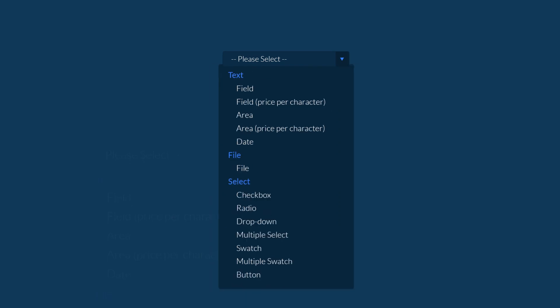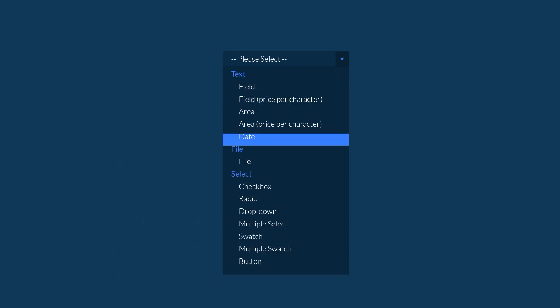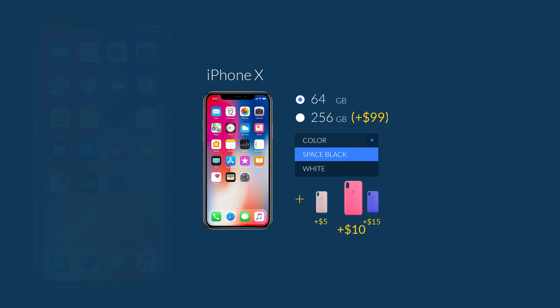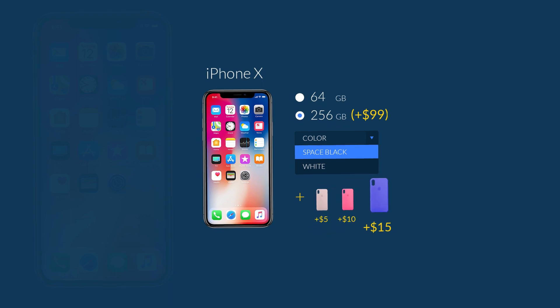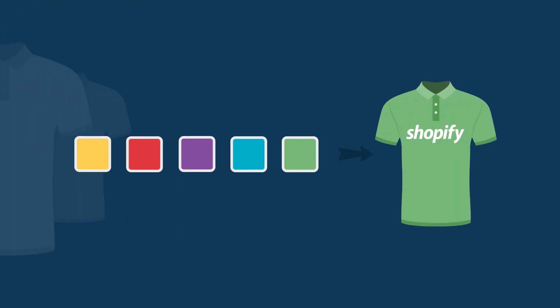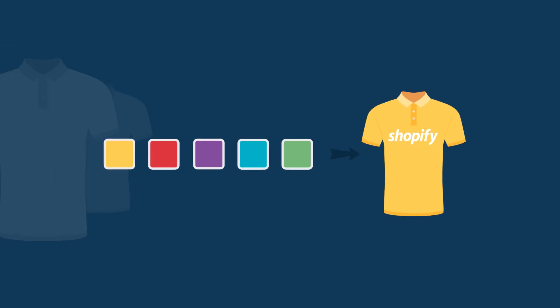Choose from 10 available product option types. Define the price of any option's value. Use color and image swatches to fully visualize your product offerings.